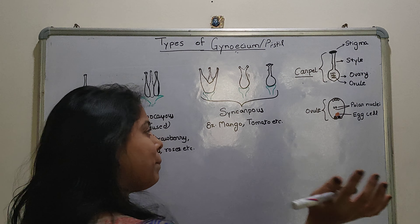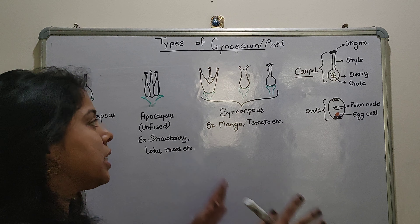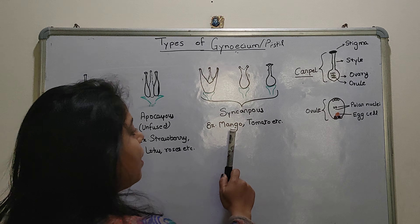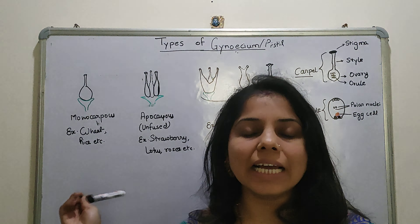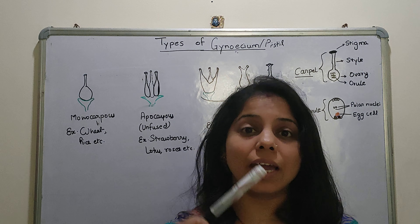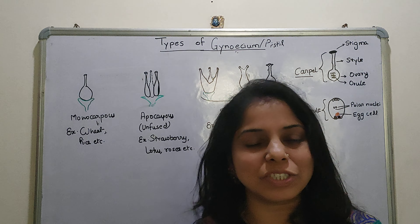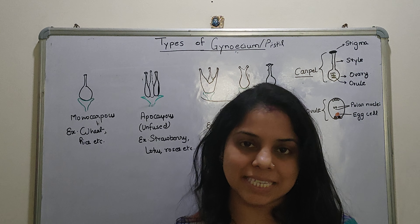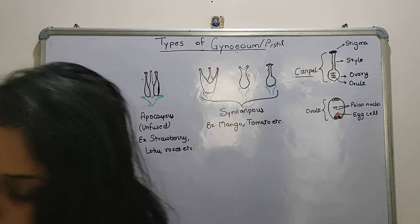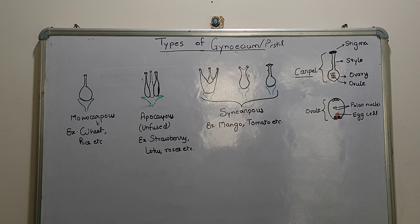Syncarpous is a different condition where the carpels are fused together — when the ovaries are fused, it is called syncarpous. This is the condition seen in plants like mango and tomato.